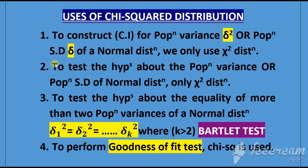The second use: to test the hypothesis about the population variance or population standard deviation of a normal distribution, we use only chi-square distribution.